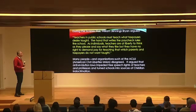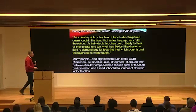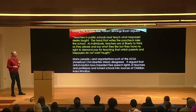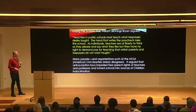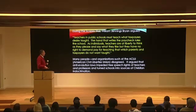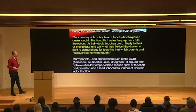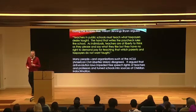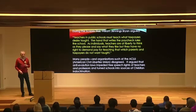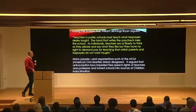Going back to what William Jennings Bryan argued during the trial — a theme he repeated frequently to the media: 'Teachers in public schools must teach what taxpayers desire taught. The hand, the rights, the paycheck rules the school. As individuals, teachers are at liberty to think as they please and say what they like, but they have no right to demand pay for teaching that which parents and taxpayers do not want taught.' Bryan's argument was essentially: study Darwin on your own time, don't bring it into the public school curriculum.